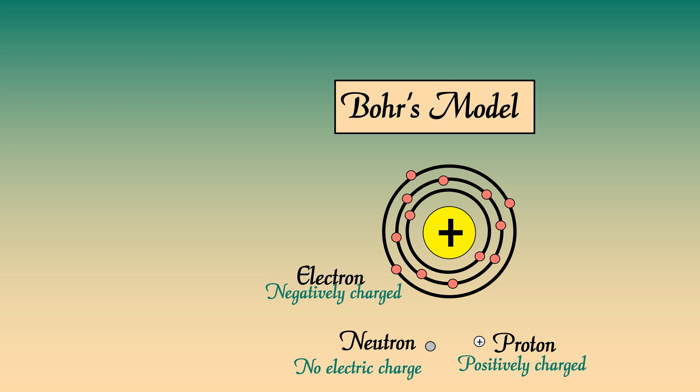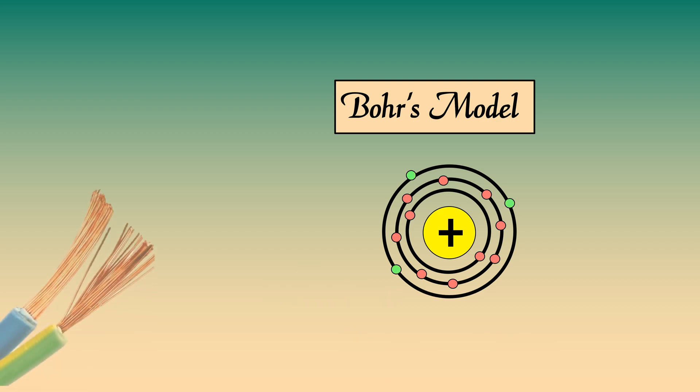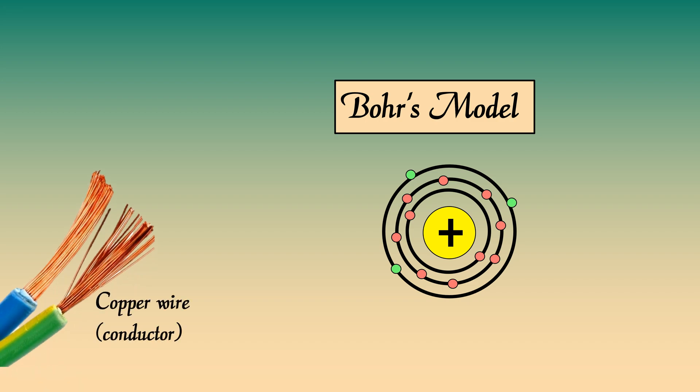The electrons in the outermost shell are called valence electrons. For some materials like conductors, these electrons are loosely bound. That is, they can move freely. These electrons are called free electrons. So conductors are made of atoms with loosely bound free electrons.